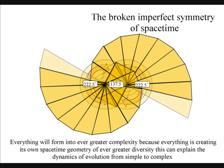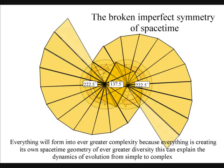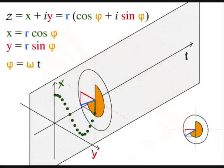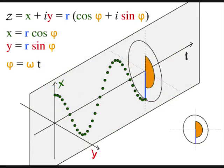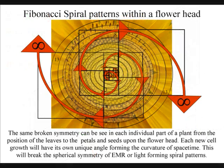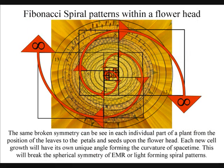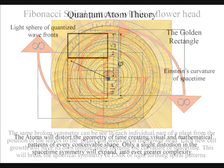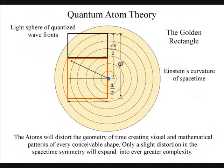The forward momentum of electromagnetic radiation will place light-charged particles that repel, becoming equally spaced along the curvature of their own graded space-time. The same broken symmetry can be seen in each individual part of a plant, from the position of the leaves to the petals and seeds upon the flower head.